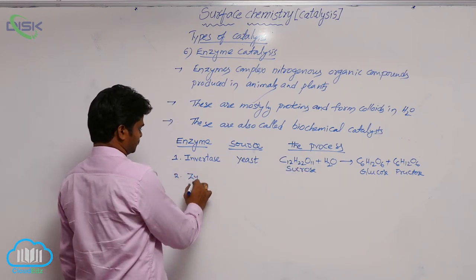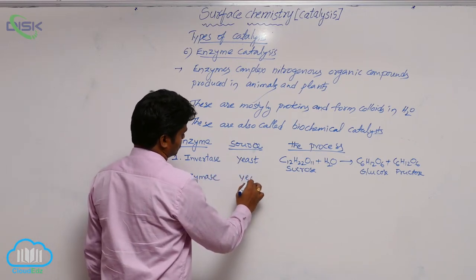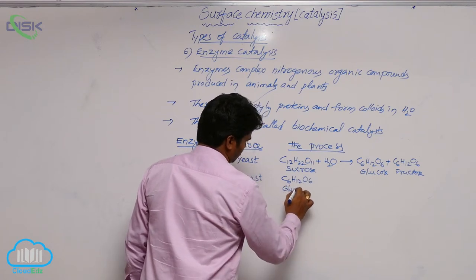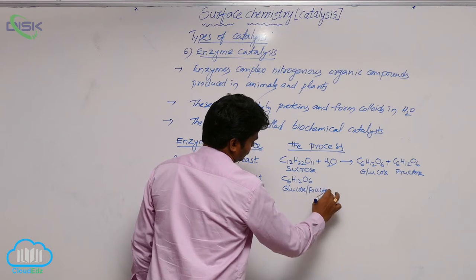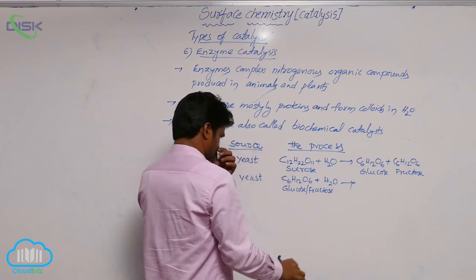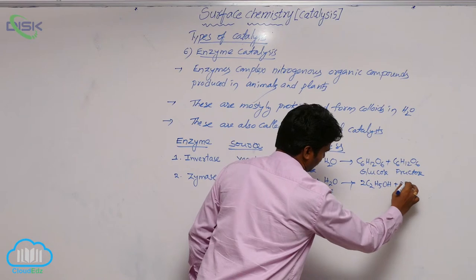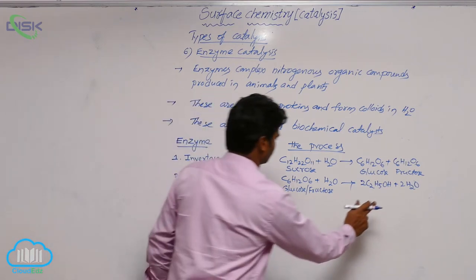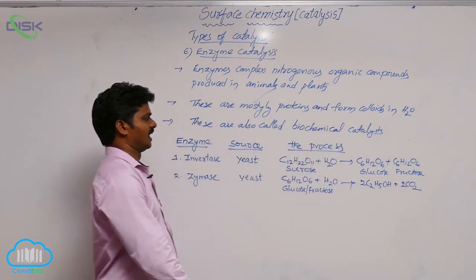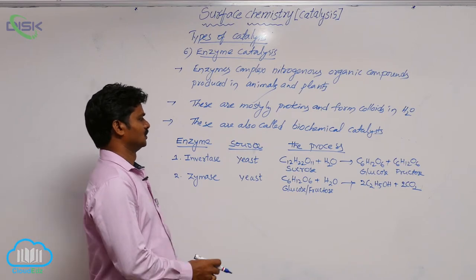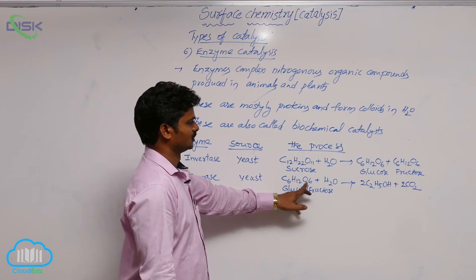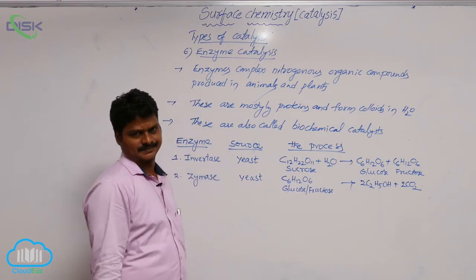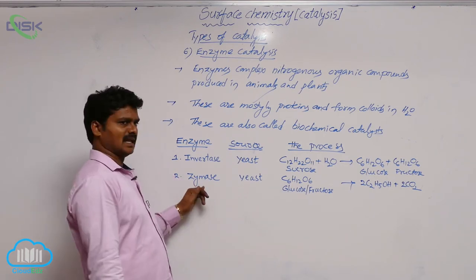The second enzyme is zymase, also sourced from yeast. Here, glucose or fructose (C6H12O6) is converted into ethyl alcohol and carbon dioxide. Glucose or fructose formed can be converted into ethyl alcohol and CO2, and the enzyme used in this process is zymase.